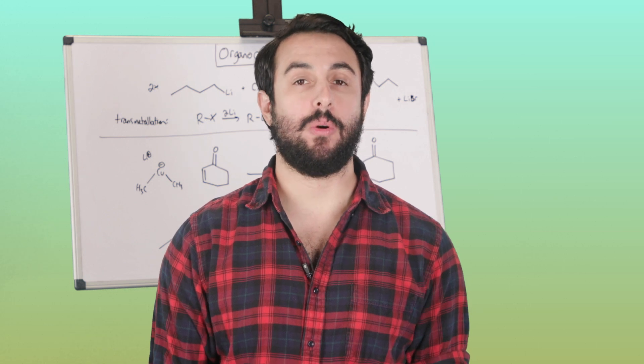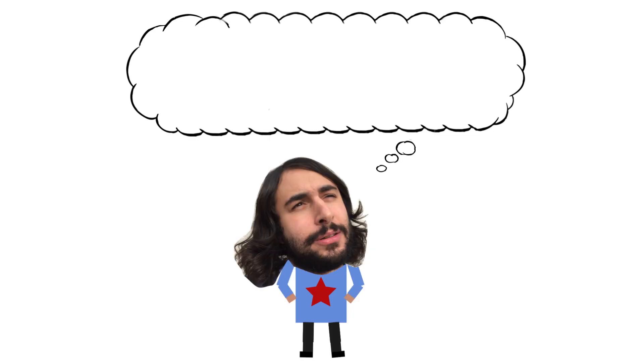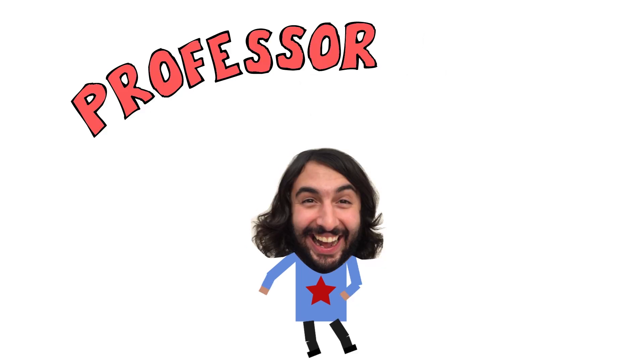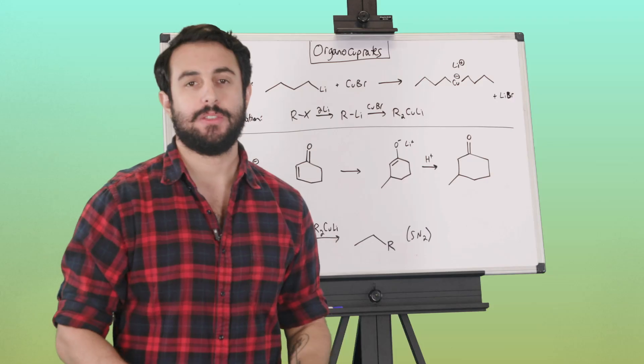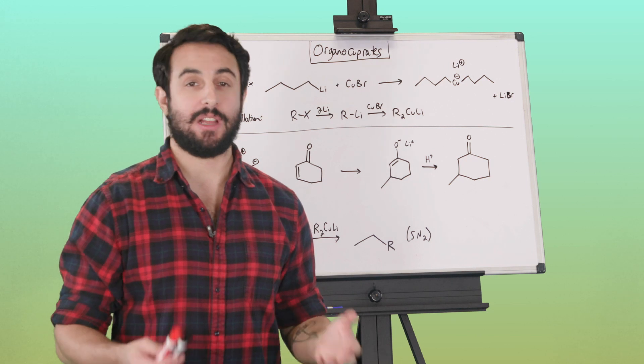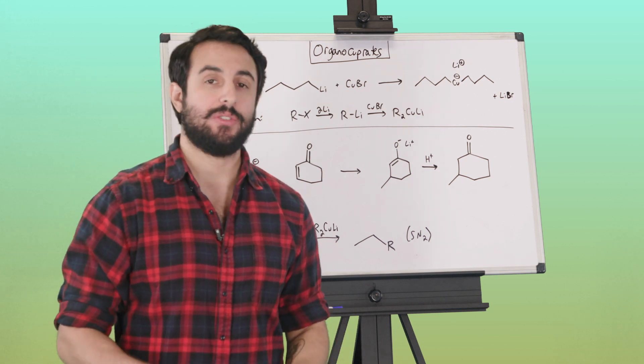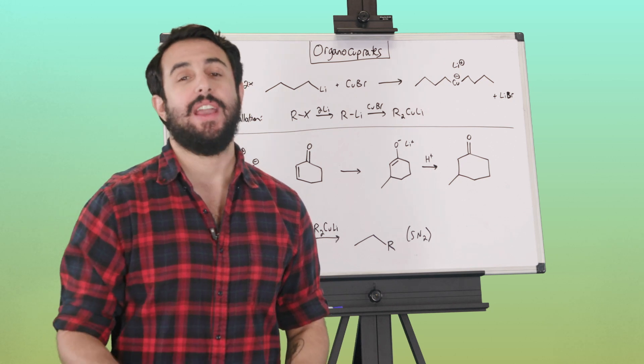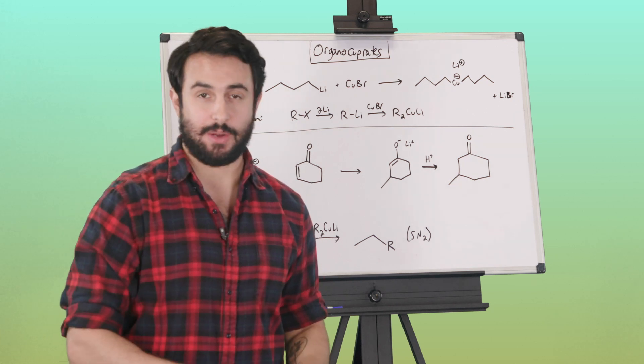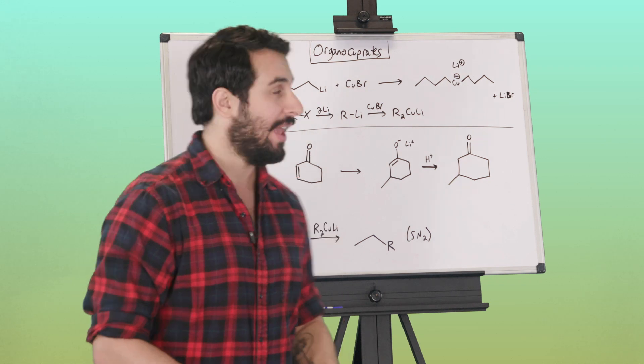Hey, it's Professor Dave. Let's talk about organocuprates. Organocuprates are organic compounds involving copper, so that qualifies them as organometallic reagents, just like Grignard reagents and also the organolithium reagents that we looked at just before this.